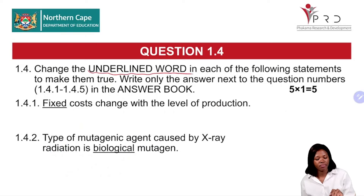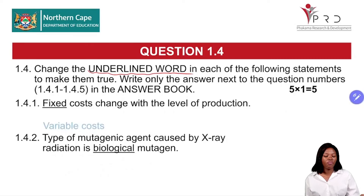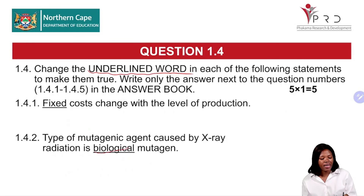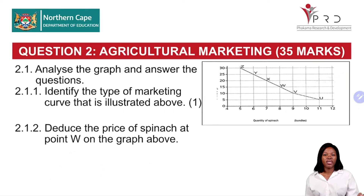Question 1.4: You only change the underlined words in each statement. Question 1.4.1: The underlined word is 'fixed' — 'Cost changes with level of production.' The correct answer is 'variable,' because fixed costs do not change with the level of production, but variable costs do. Question 1.4.2: The type of mutagenic agent caused by X-ray radiation is 'biological' (underlined) — the correct answer is 'physical.'